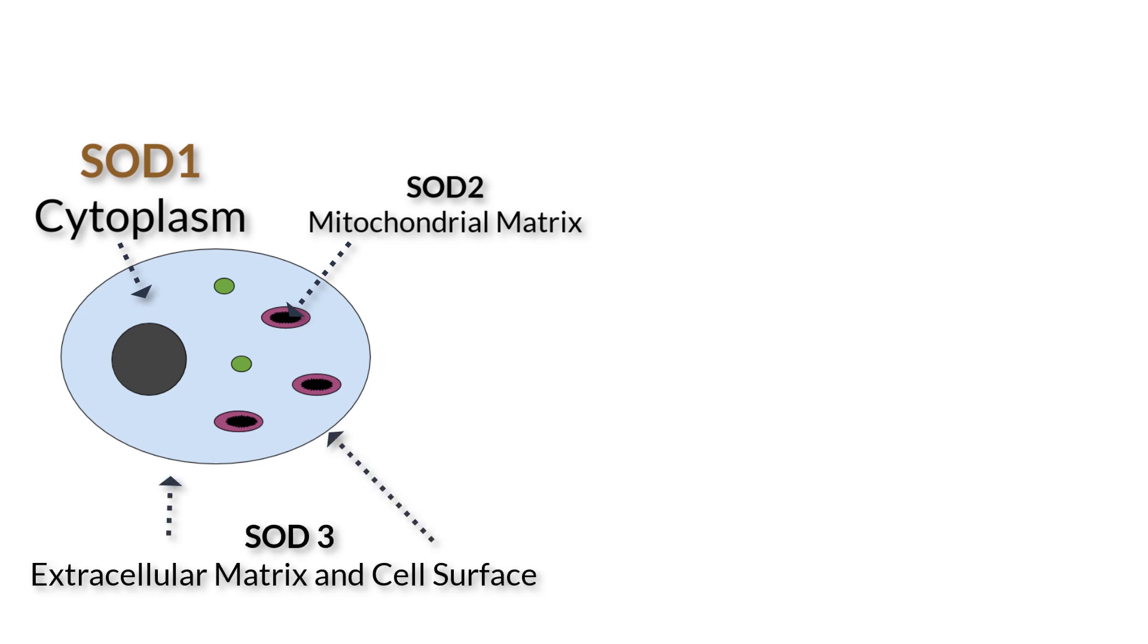There are three different types of superoxide dismutase. There's intracellular copper zinc superoxide dismutase referred to as SOD1. There is manganese superoxide dismutase referred to as SOD2 which is found in the mitochondrial matrix. And there is also extracellular copper zinc superoxide dismutase referred to as SOD3 which is found on tissues on the extracellular matrix and on cell surfaces.